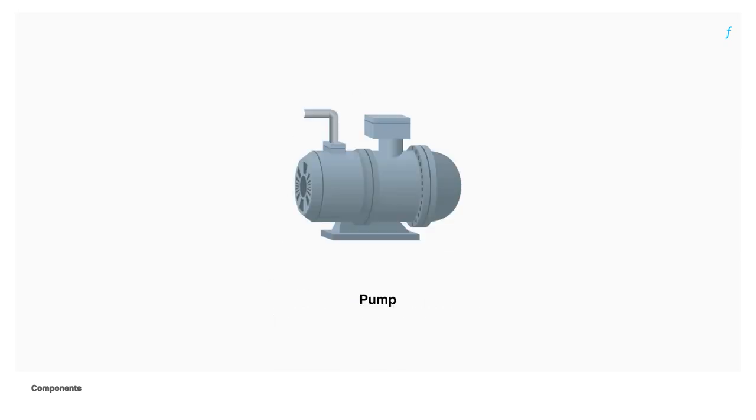Absorption pumps are used to pump the solution used in the process from the absorber to the generator. Pumps are also required to pump chilled and cooling water around the system.